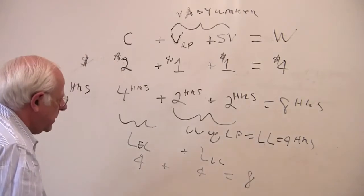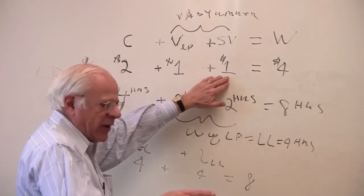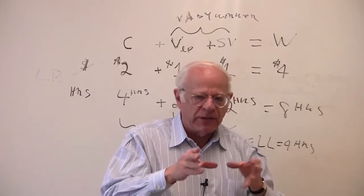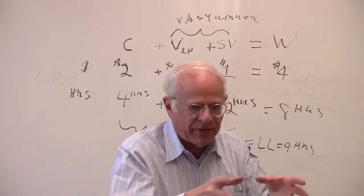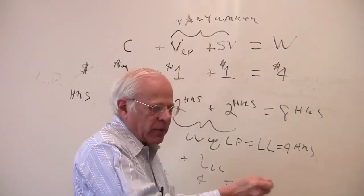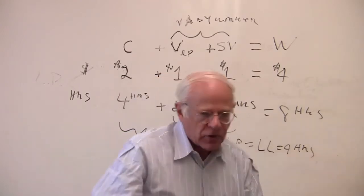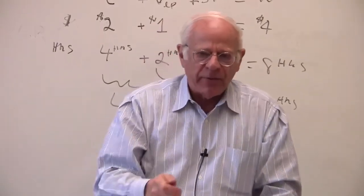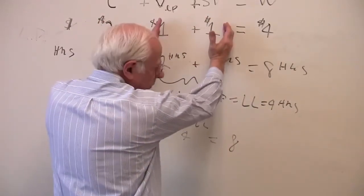Marx has established that the source of new value — this surplus value — arises outside exchange, in the consumption of this particular commodity, labor power, by the capitalist. What Marx means by the consumption of labor power is that the use value of this commodity is the actual labor performed — when the capitalist puts the laborer to work for those four hours, which is the length of the workday.